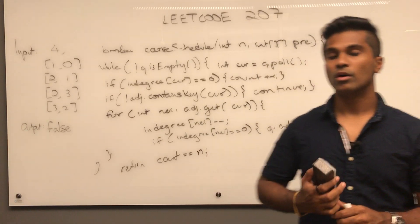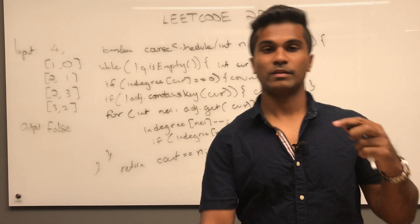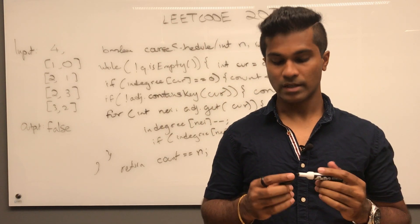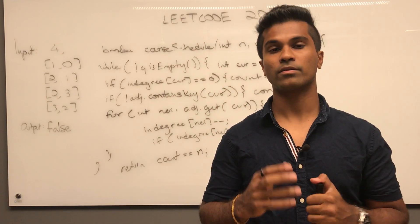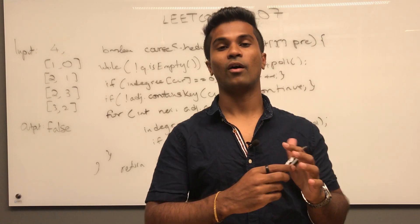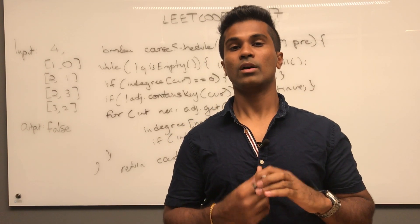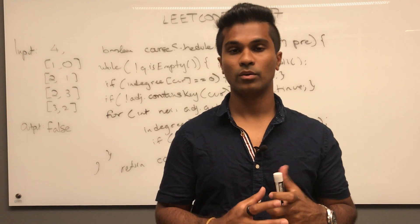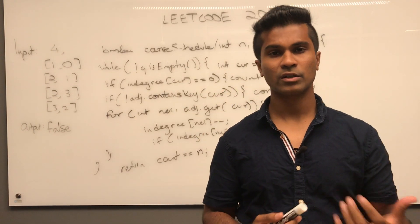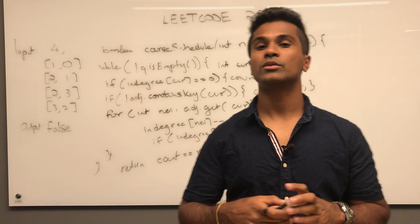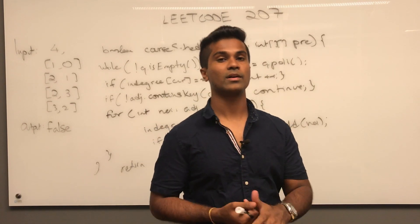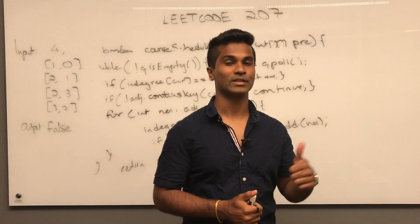One thing to note: there may be different connected components, but since we initially added all nodes with in-degree zero to the queue, we essentially loaded all connected components. That's how you solve Course Schedule. If you liked it please thumbs up and subscribe, and let me know how I can improve — thanks for watching.